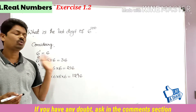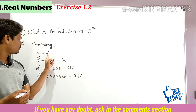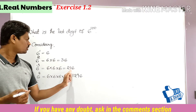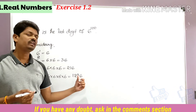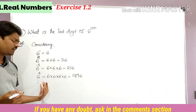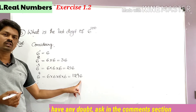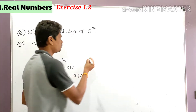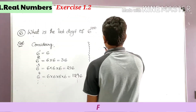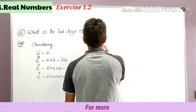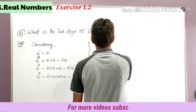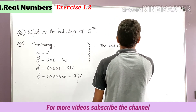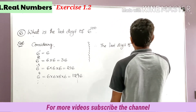So 6 to the power 1 is 6, 6 to the power 2 is 36, 6 to the power 3 is 216, 6 to the power 4 is 1296. If you write 6 to the power 5, it again ends with 6 only. If you write 6 to the power 6, it again ends with 6 only. Therefore the last digit of 6 to the power 1, 6 to the power 2, 6 to the power 3, 6 to the power 4, and so on, is 6.